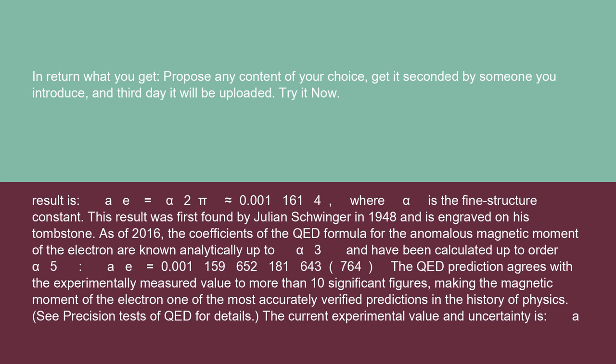The result is a_e equals alpha over 2π, approximately equal to 0.0011614, where alpha is the fine structure constant. This result was first found by Julian Schwinger in 1948 and is engraved on his tombstone.